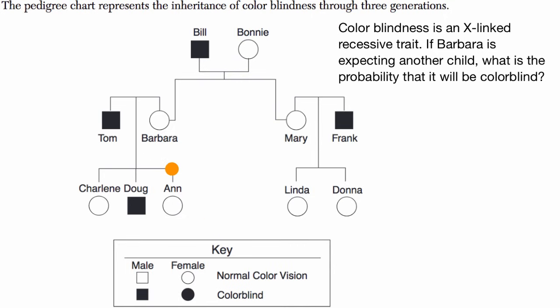They're asking us about their next child. What is the probability that it is going to be colorblind? To help us with that, we can try to figure out the genotypes of Tom and Barbara.